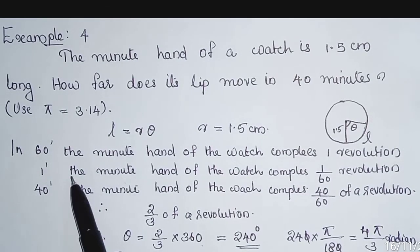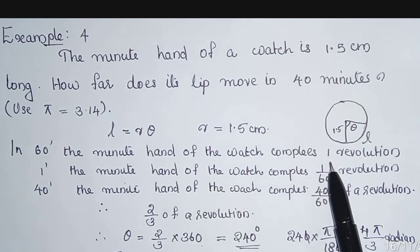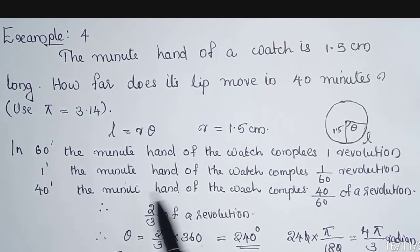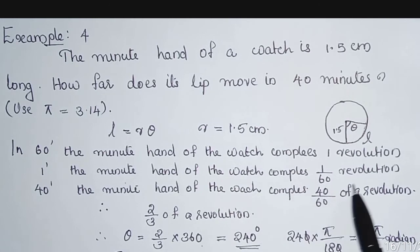In 60 minutes, the minute hand of a watch completes 1 revolution. So in 1 minute, the minute hand of a watch completes 1/60 revolution.